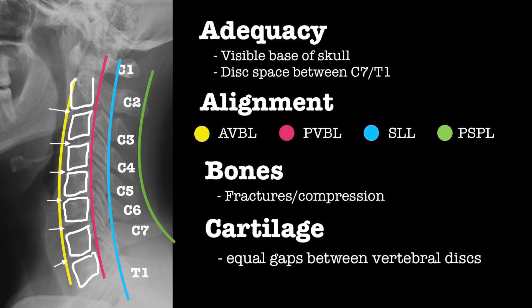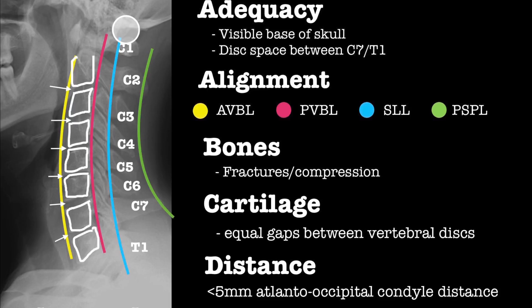C is for cartilage — ensure that there are equal gaps between the vertebral bodies. D is for distance: the distance from the occiput to the atlas should be less than 5mm. If increased, there's likely an atlanto-occipital dissociation.